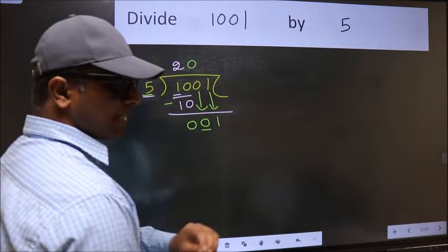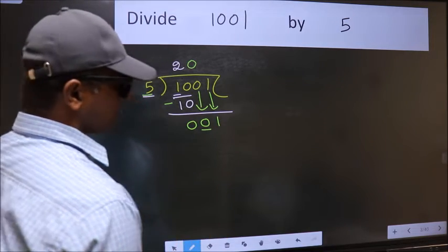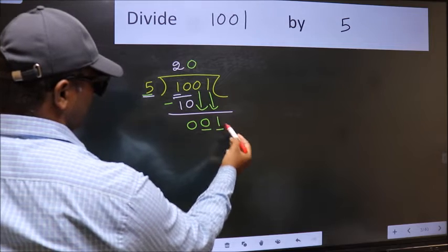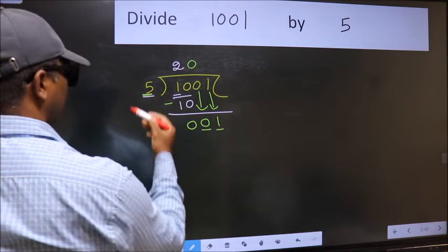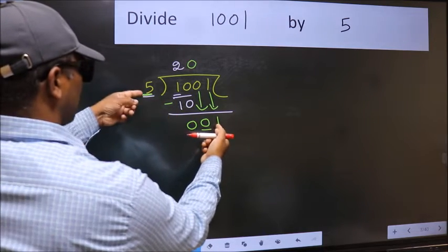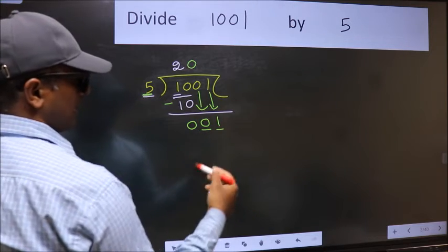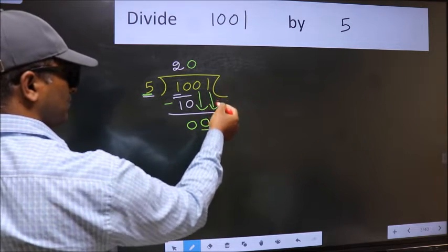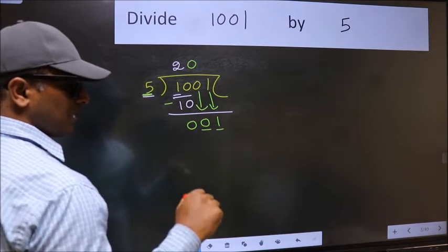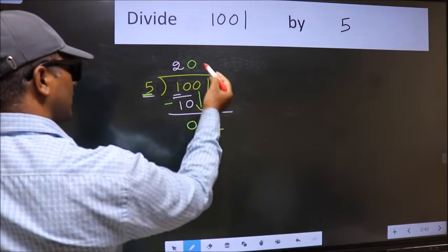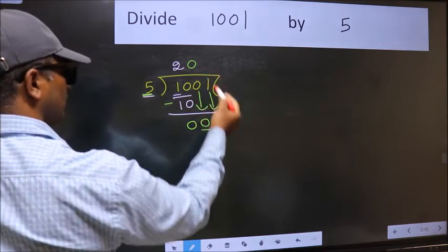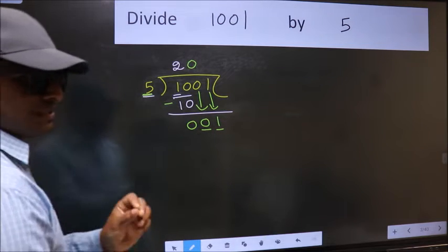After this step, the mistake happens. And the mistake is this. Here we have 1 and here 5. 1 is smaller than 5. And we don't have any more numbers to bring it down. So what many do is they directly put dot, take 0, which is wrong.